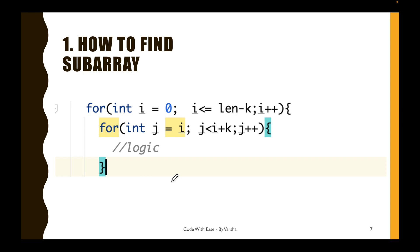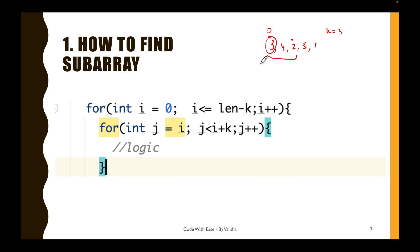To find the subarrays we use two for loops. The outer loop runs from index 0 to length minus k. For an array of length 5 with k=3, that's indices 0 to 2. The inner loop runs from i to i plus k, generating each subarray of size 3. So starting at i=0, j runs from 0 to 2, giving us the first subarray: elements at indices 0, 1, 2.